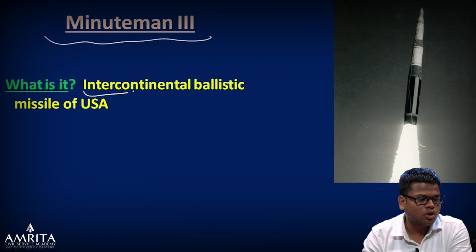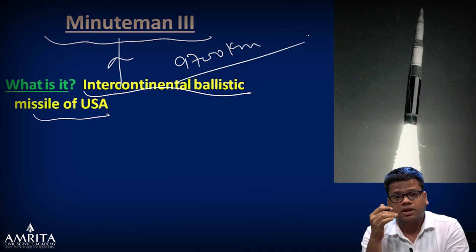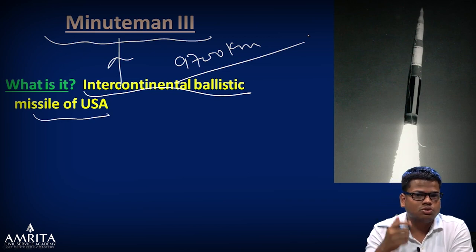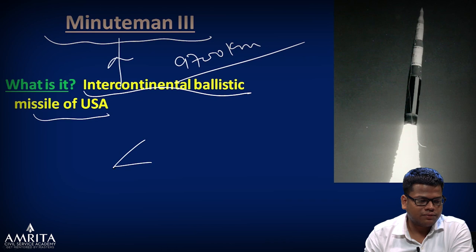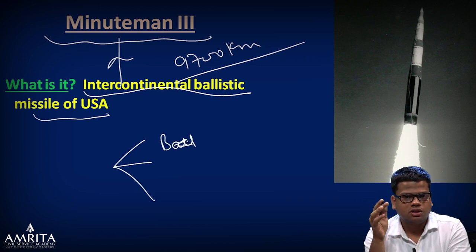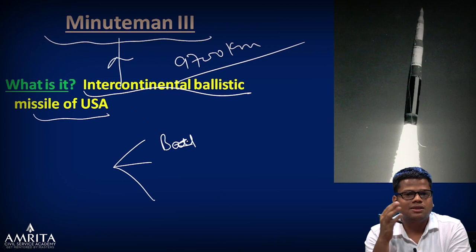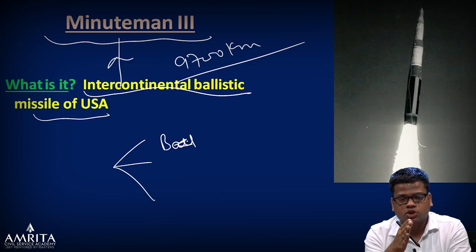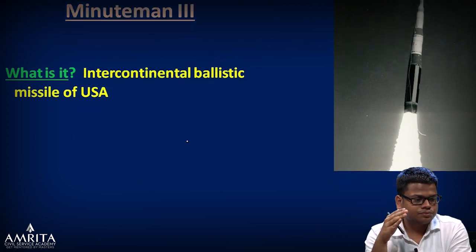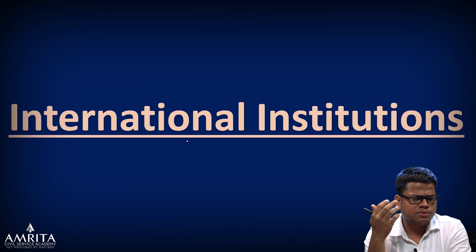Next, the US Minuteman III — an intercontinental ballistic missile with a range of more than 9,700 kilometers. Just as India has Agni and Prithvi, this is the US equivalent. Your homework is to read about different missiles. From the static portion, know the difference between ballistic missiles and other missiles — ballistic missiles are not guided — and read about India's various missile projects.